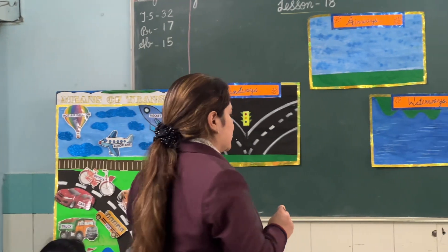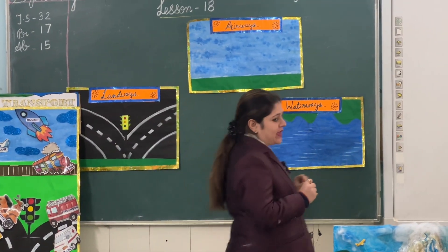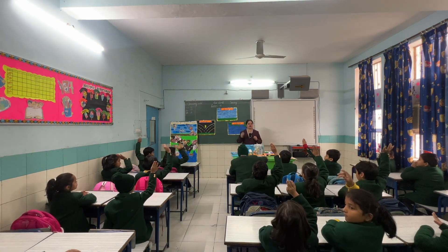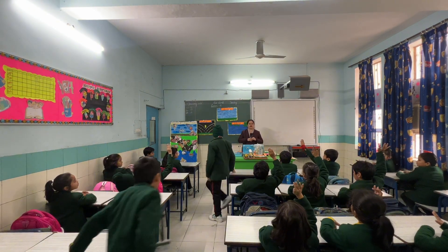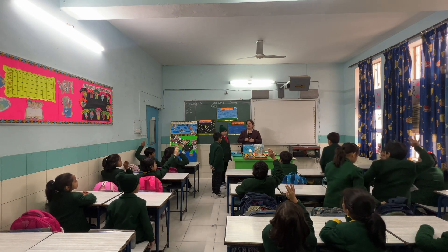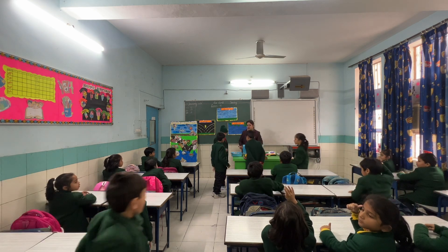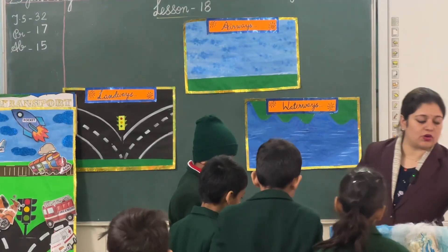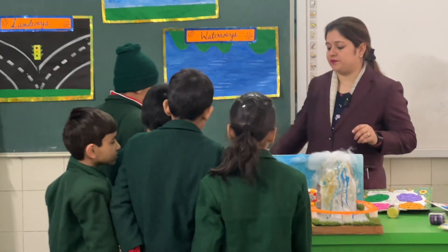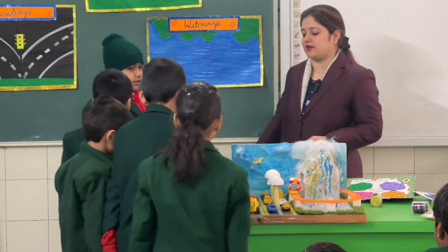I want 5 volunteers from the class. Raise your hand if you want to come and play the game. Prachual, come here. Paad, Maryam, Sarwag, Devin. Pick one flash card from here, one by one slowly, and stand here. Take one card and stand here quickly.